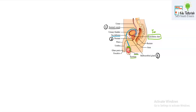The ejaculatory duct contains the combined secretion of the seminal vesicle and vas deferens. As the secretion moves downward, the secretion of the prostate gland also joins in, followed by that of the bulbourethral gland (Cowper's gland). When all these secretions mix together, the sperms become active. At this point, the sperms mixed with the fluid of these three accessory glands form what is known as semen.